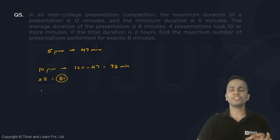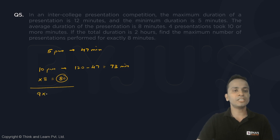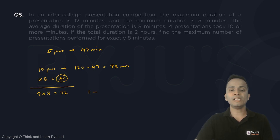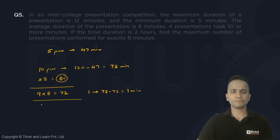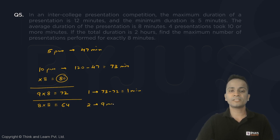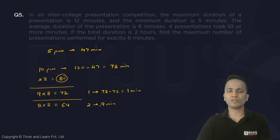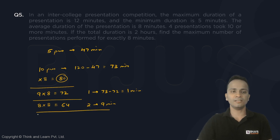So 10 presentations of 8 minutes is not possible. Trying nine: nine presentations of 8 minutes consumes 72 minutes, leaving 73 minus 72 = 1 minute for one presentation — but the minimum duration is 5 minutes, so nine is also not possible. Trying eight: 8 times 8 is 64 minutes, leaving 9 minutes for the remaining two presentations. But minimum 5 minutes each requires 10 minutes, so this solution is also not feasible.